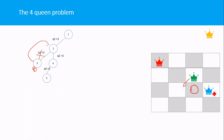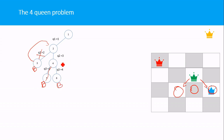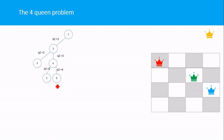We try placing Q3 in column 3, but that column is also in the line of attack of Q2. The only available choices for Q3 are column 2 and column 3, but both are in the line of attack of Q2. So we backtrack further — since Q3 is the problem, we backtrack from node 6 up to node 2 to change the choice of Q2.